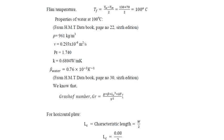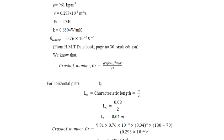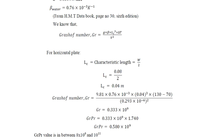The Grashof number is: Gr = g·β·L_c³·ΔT / ν². For a horizontal plate the characteristic length L_c = width/2 = 0.08/2 = 0.04 m. Substituting: g = 9.81, β = 0.76 × 10⁻³, L_c = 0.04 m, ΔT = 130 − 70 = 60°C, ν = 0.293 × 10⁻⁶ m²/s. The Grashof number Gr = 0.333 × 10⁹.